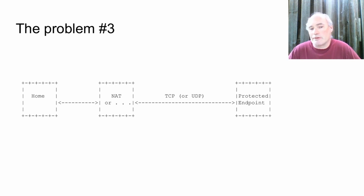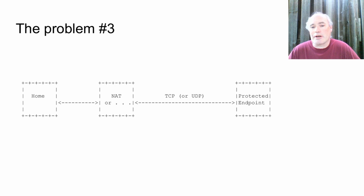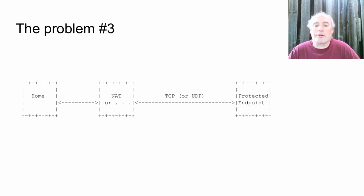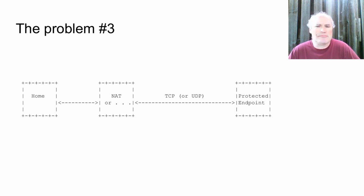Problem three is where you have a home router and TCP or UDP is the only protocol you can get through to the other end, where you want to reach your protected endpoint. Some people can only get TCP through from their home, or wherever they are, to where they want to be. LibreSwan supports it, maybe not the BSD kernels yet, but we're hoping.